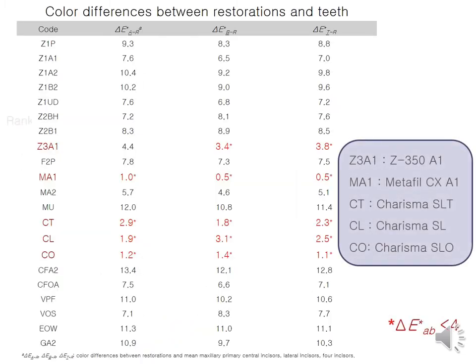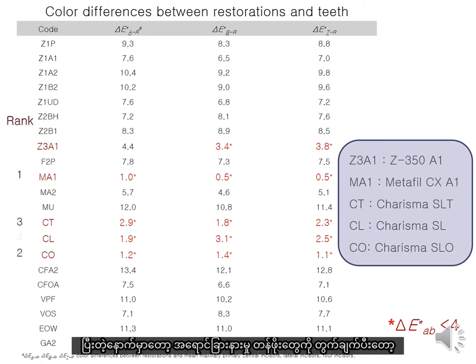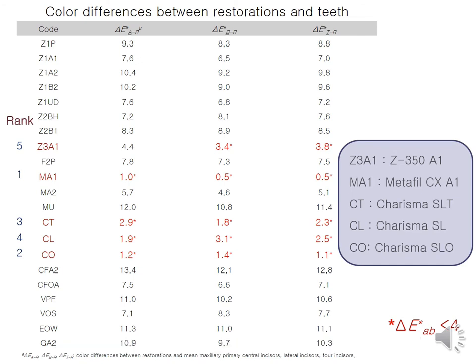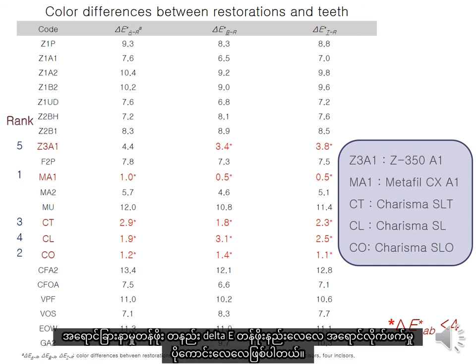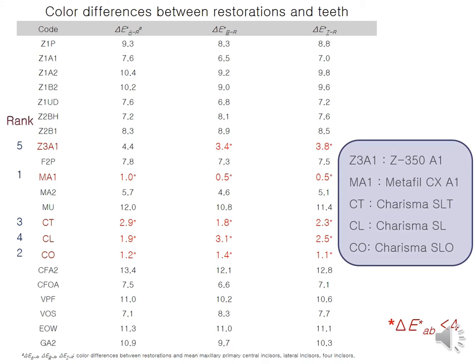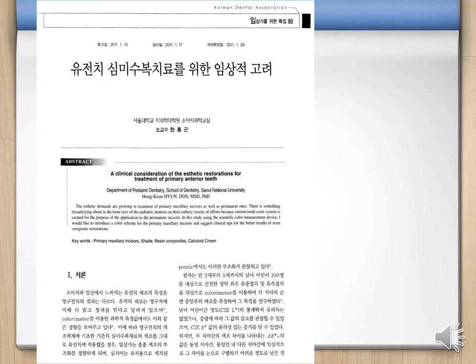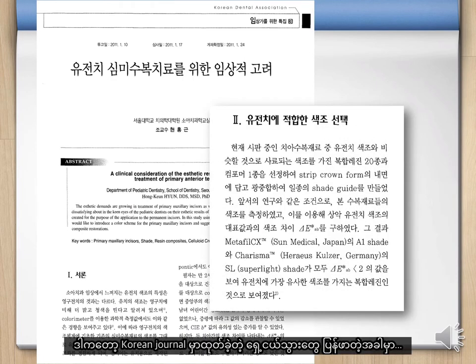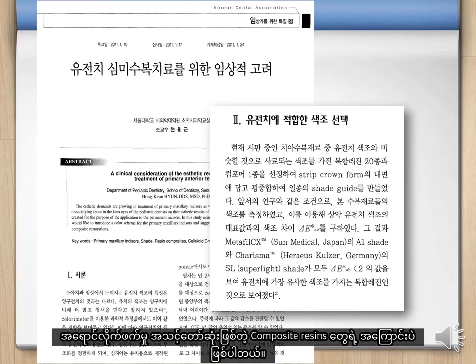The best candidates were selected for each incisor by calculating the color differences. The smaller color difference delta E A,B indicates better color matching. I published in a Korean journal that those composite resins matched well to the natural primary crown color.